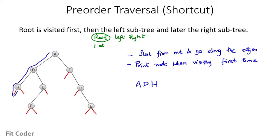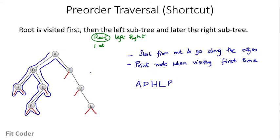Now we go to the left of H, then back to D — we are visiting it a second time, so we don't do anything. Now L is visited for the first time, so we print it. Then P — first time, so we print it. Then Z — first time, so we print it. Then C — first time, so we print it. And then E — first time, so we print it.